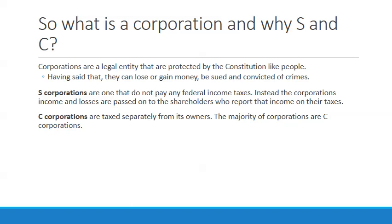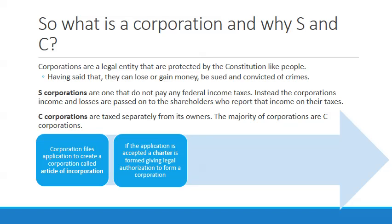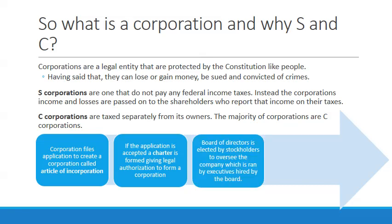C corporations are taxed separately, and they make up the overwhelming majority of corporations because of how they're structured. C corporations allow shareholders to move in and out more efficiently. To form a corporation, they file an Article of Incorporation; if granted, they create a charter — a legal authorization. Then a board of directors is elected by the stockholders to oversee the company, which is run by executives hired by the board. Stockholders buy stock, giving them partial ownership.